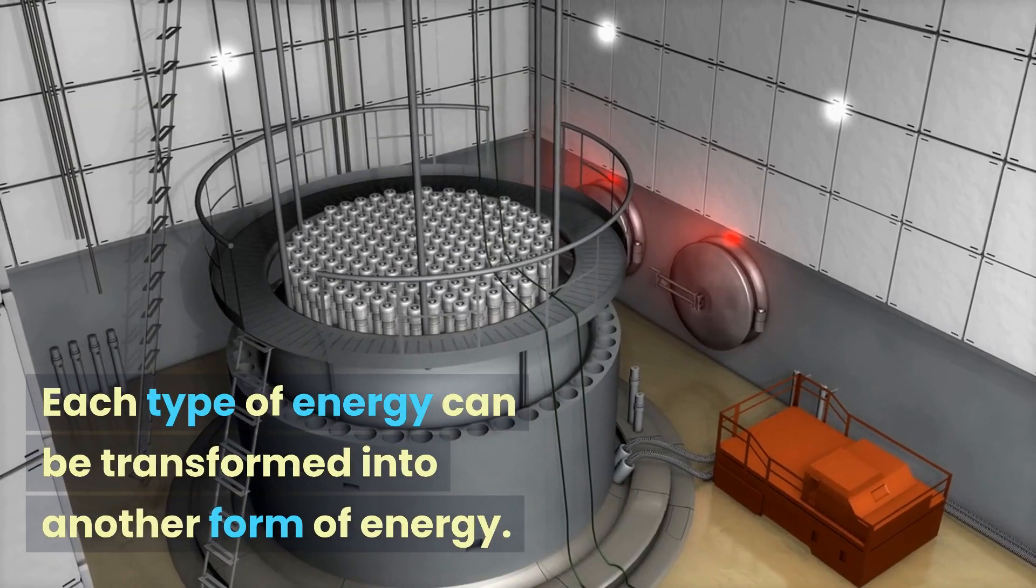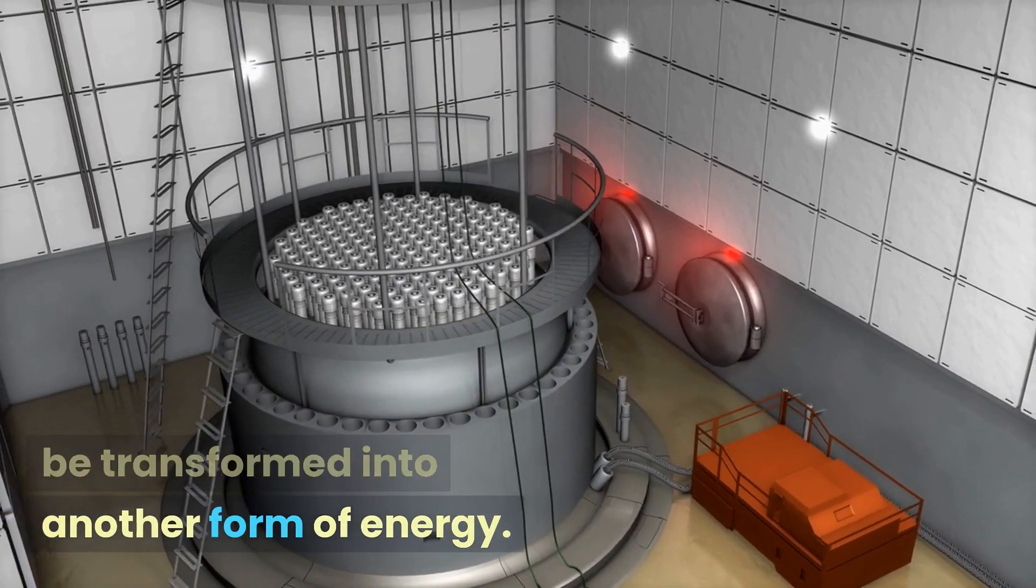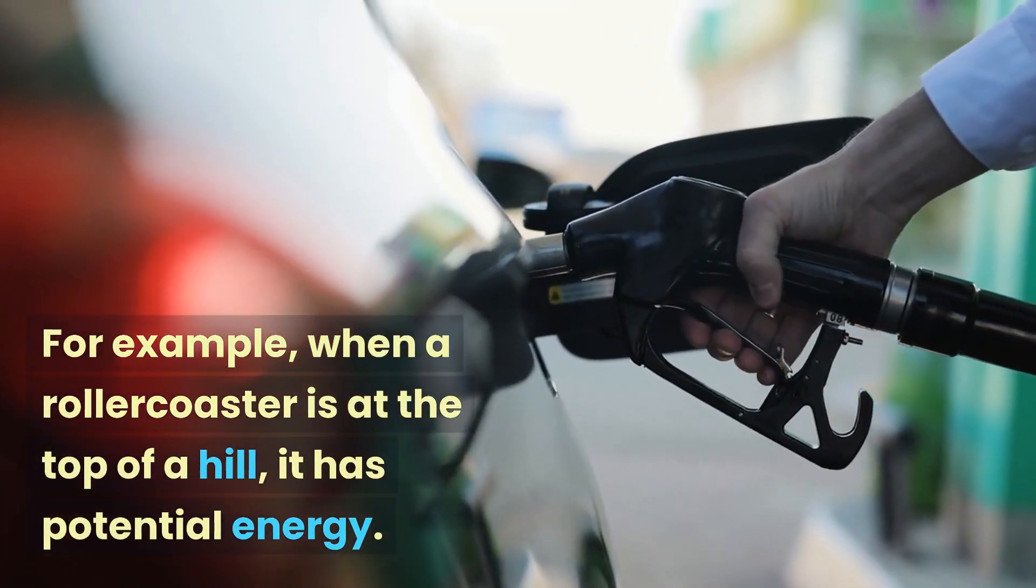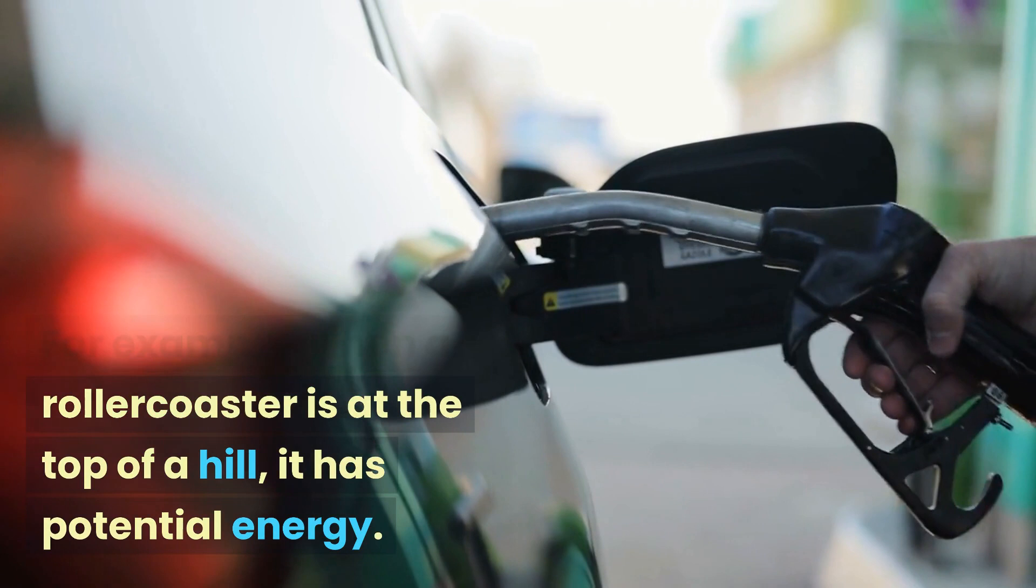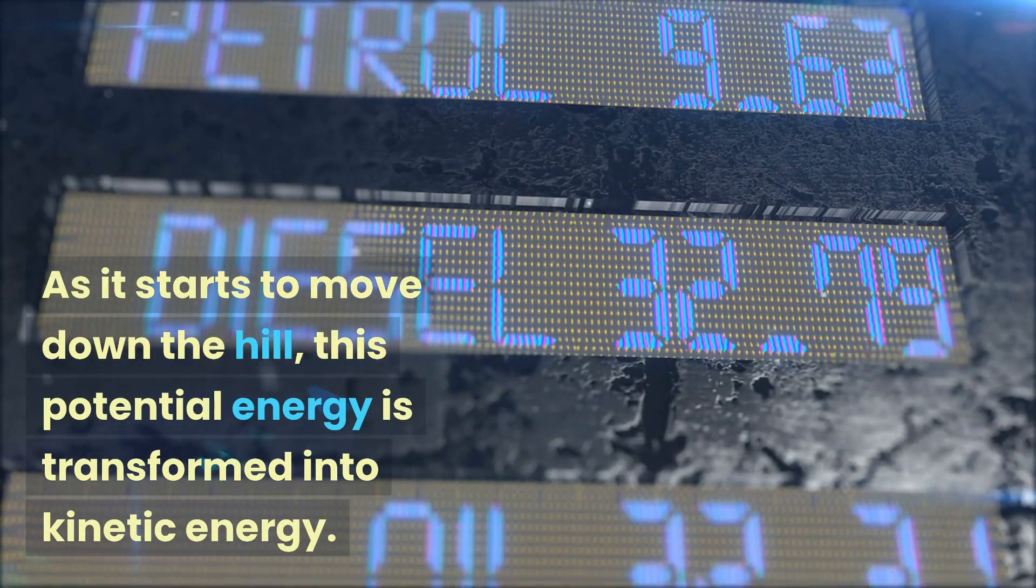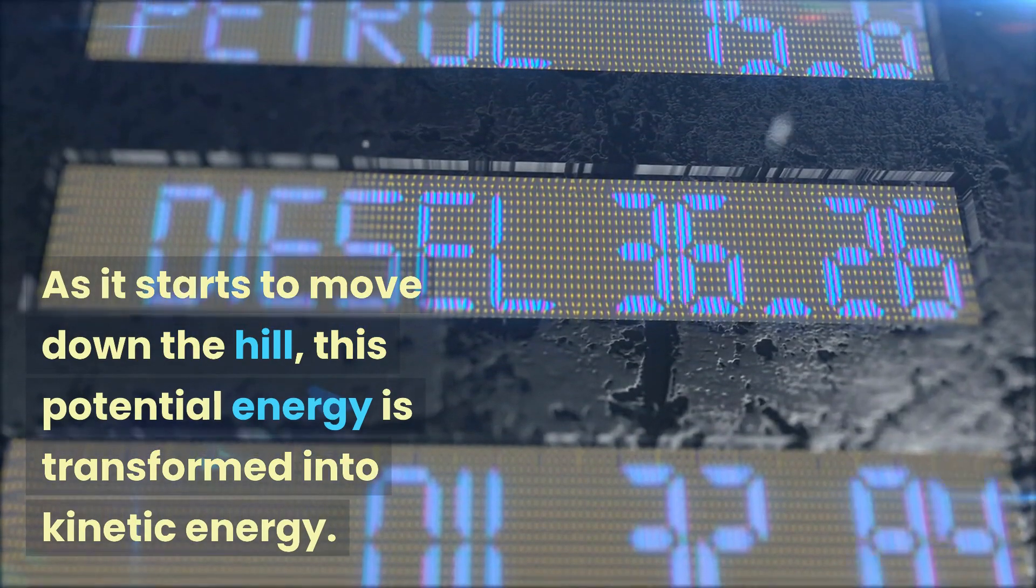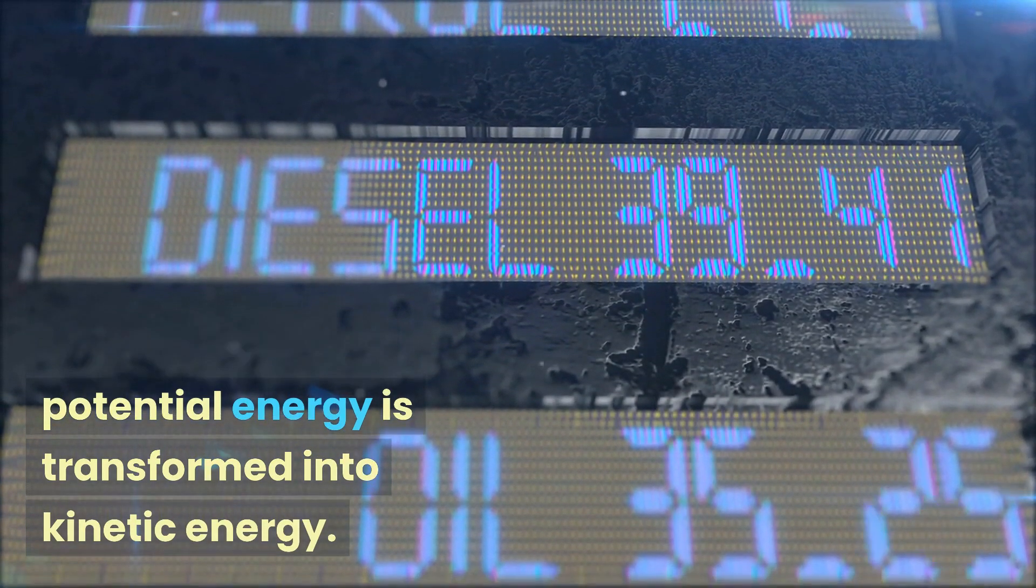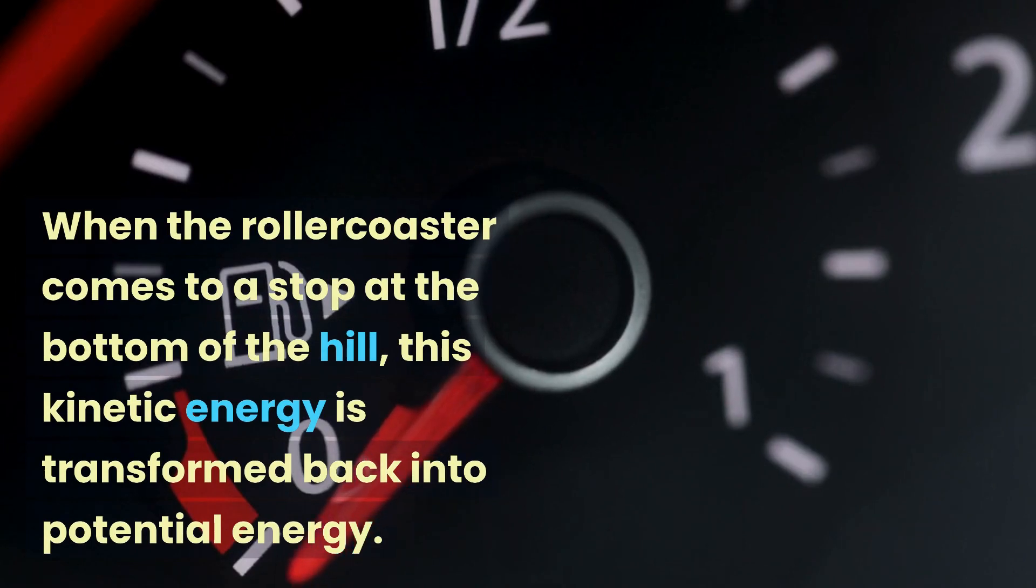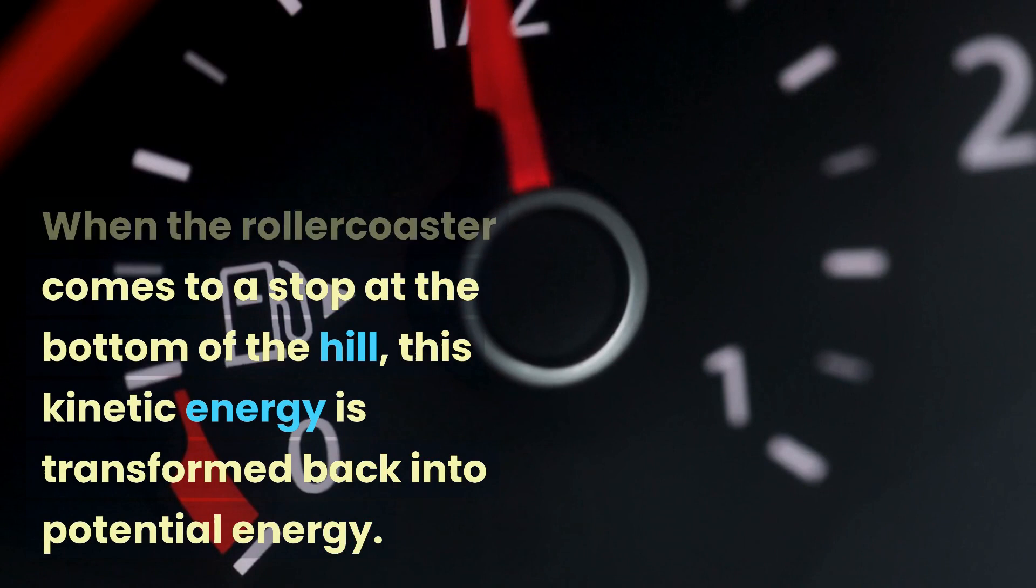Each type of energy can be transformed into another form of energy. For example, when a roller coaster is at the top of a hill, it has potential energy. As it starts to move down the hill, this potential energy is transformed into kinetic energy. When the roller coaster comes to a stop at the bottom of the hill, this kinetic energy is transformed back into potential energy.